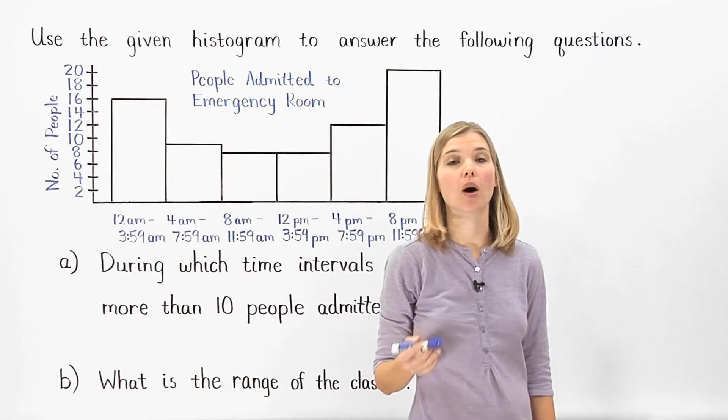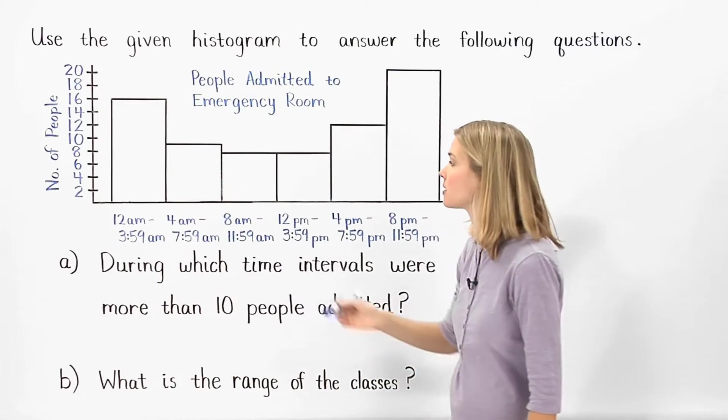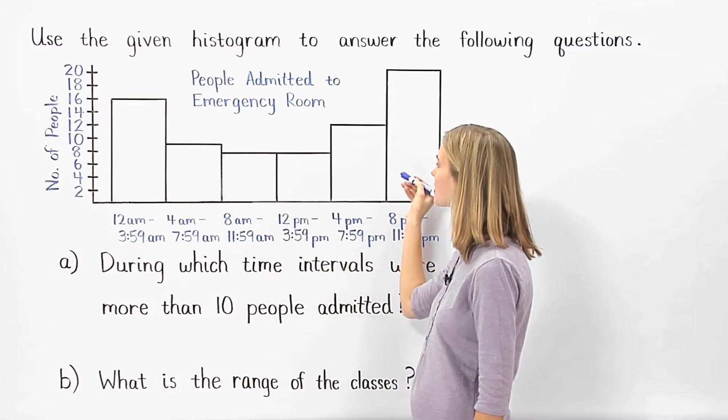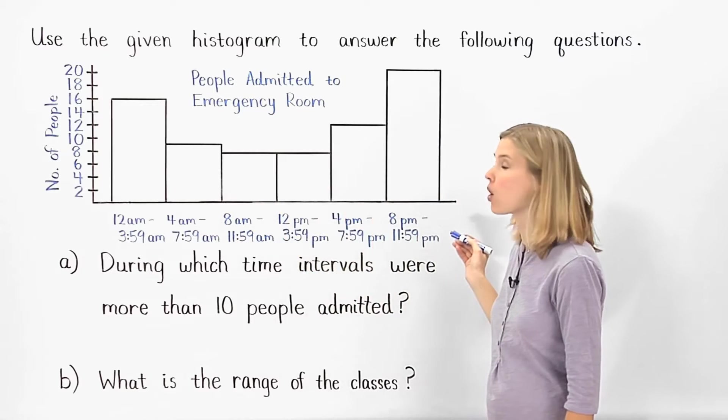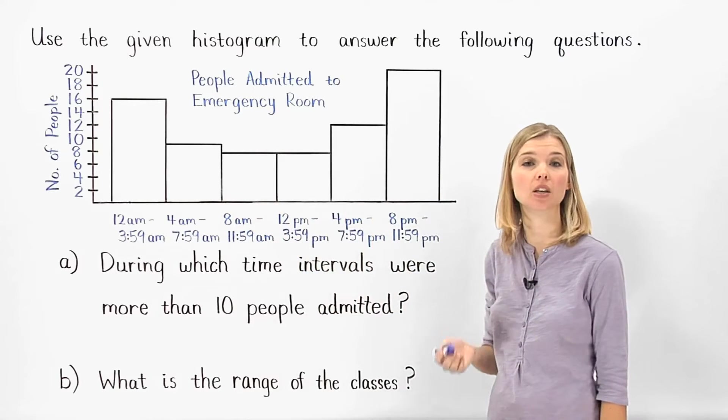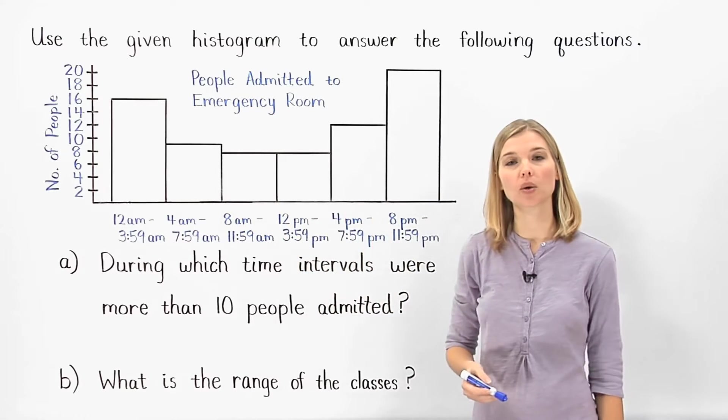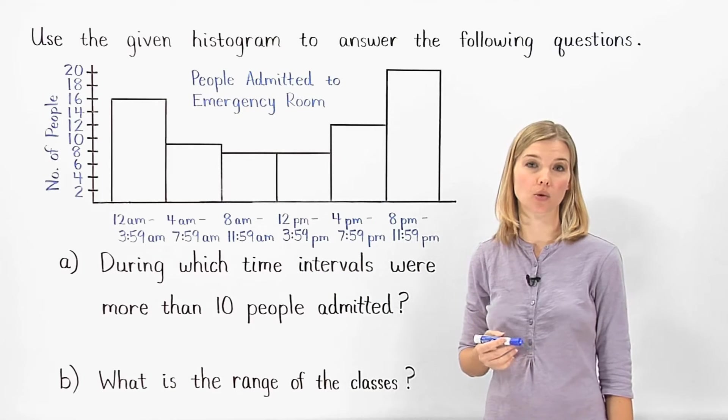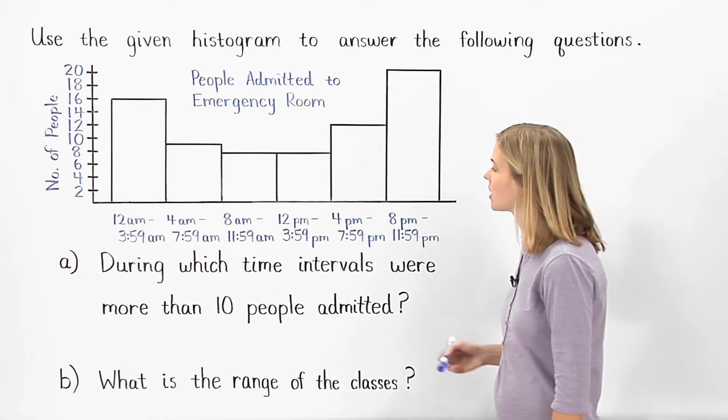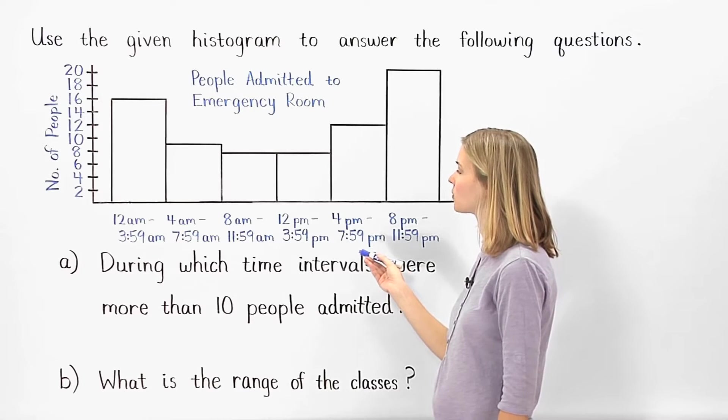Notice that unlike a bar graph, a histogram has no spaces between the bars, because the time intervals on the horizontal axis are continuous. And it's important to understand that we must use equal time intervals throughout. In this case, we use 4-hour time intervals.